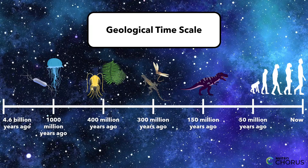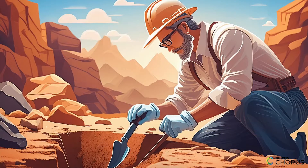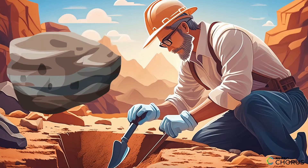They do this by looking at rocks and the fossils they contain. Imagine you're an archaeologist and you've just discovered a new layer of rock. The rock has different layers, just like a cake. The bottom layer is the oldest and the top layer is the youngest. Each layer tells a different story about the Earth's history.